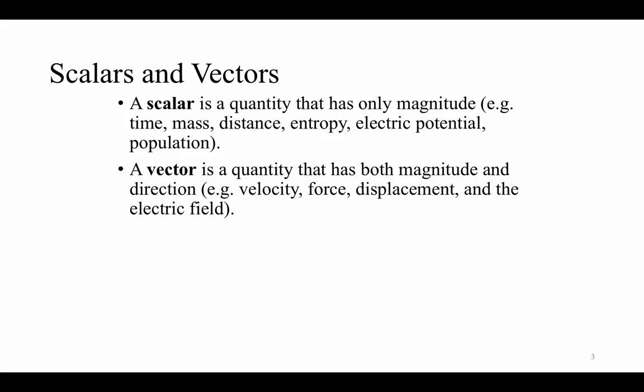Some examples of scalar quantities are time, mass, distance, entropy, electric potential, and population. It is important to understand that these scalar quantities can also be functions of other variables — for instance, the electric potential or voltage can be a function of position in space. We'll talk more about that in a moment.